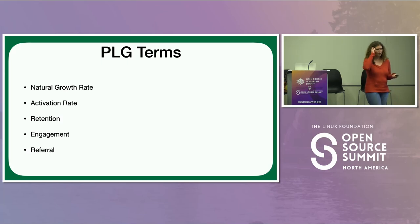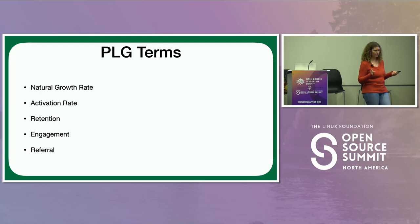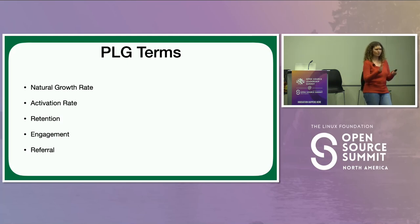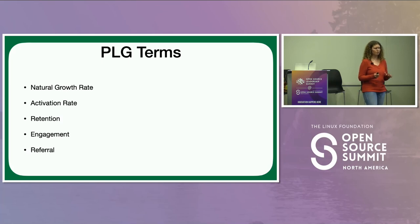There are some product-led growth ideas to keep in mind. One is the natural growth rate. Even if you have a hobby open source project with no marketing budget, you're probably doing some kind of evangelism — writing blog posts, speaking at conferences, telling people about the project. Your natural growth rate is actually how much your project would grow if you did none of that — if you just put your project out there and allowed people to discover it without any activities on your part. It's a benchmark: is this growing even with me doing absolutely nothing to promote it?